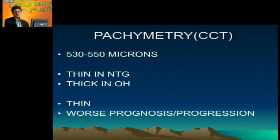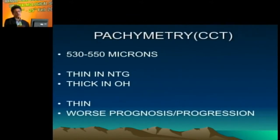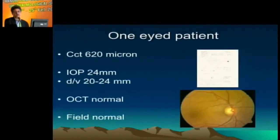Pachymetry is important. The key thing to remember is: the thinner the corneas, the more aggressive your approach must be. These patients will progress faster and you are under-recording their pressures.